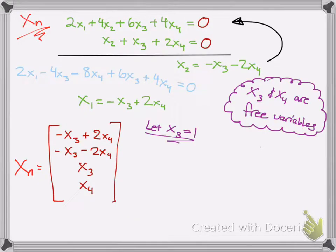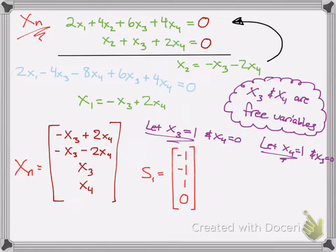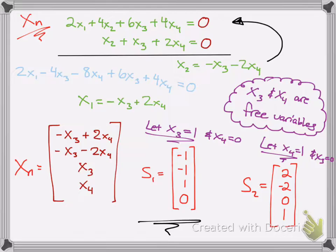So, set one free variable equal to 1 and the other to 0. Let x3 equal 1 first and x4 equal 0. Plug x3 into the template and you'll have your special solution for the first free column space. Our first special solution is negative 1, negative 1, 1 — because that's what we let x3 equal — and 0. Now let x4 equal 1 and x3 equal 0, flipping them. Plug in x4: we get 2, negative 2, 0, and 1. So we have our two special solutions.